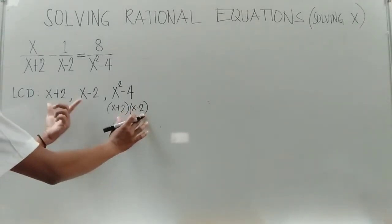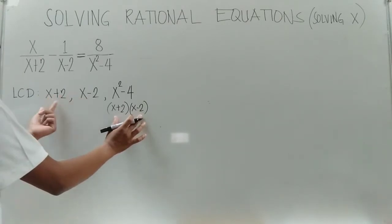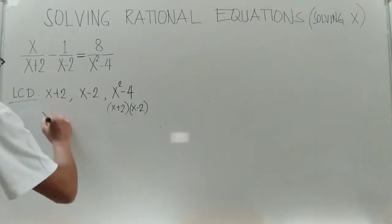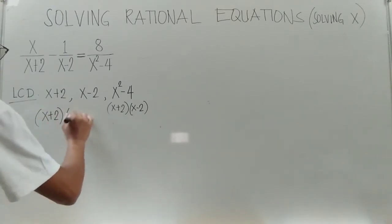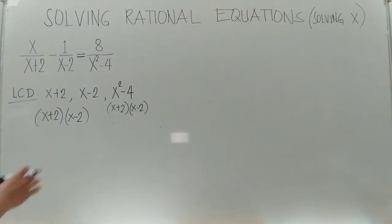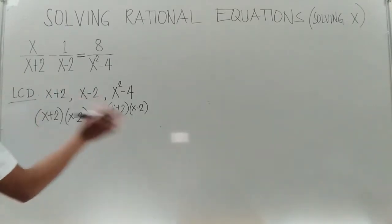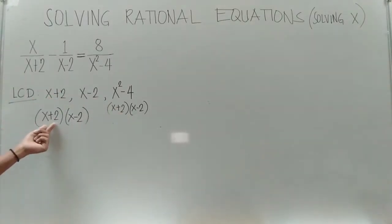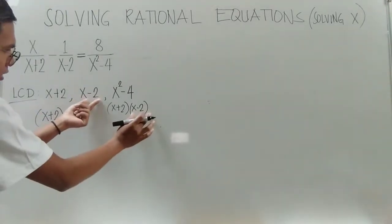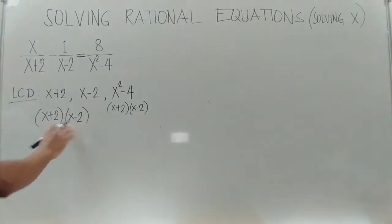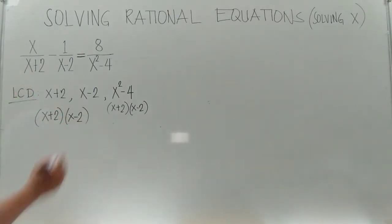We have identical terms: the quantity x plus 2 and x minus 2. To identify your LCD, just put x plus 2 once and x minus 2 once. We copy the common factors — x plus 2 appears twice so we use one, and x minus 2 appears twice so we use one. So the LCD is (x plus 2)(x minus 2).